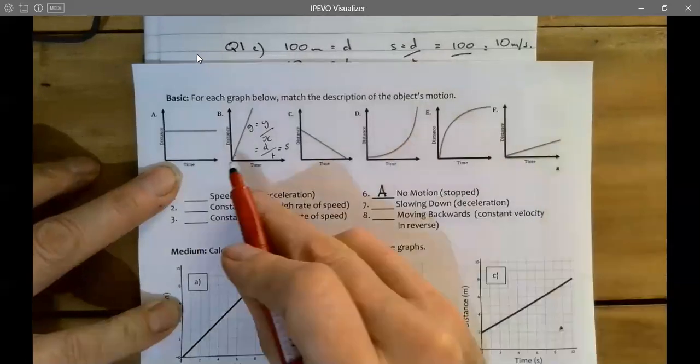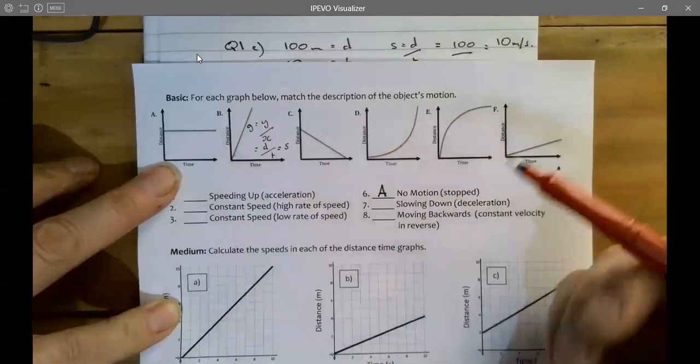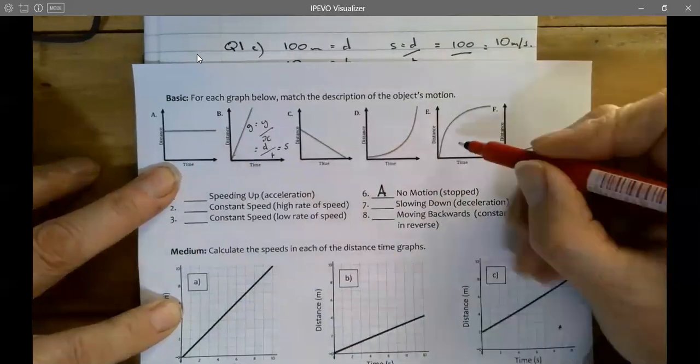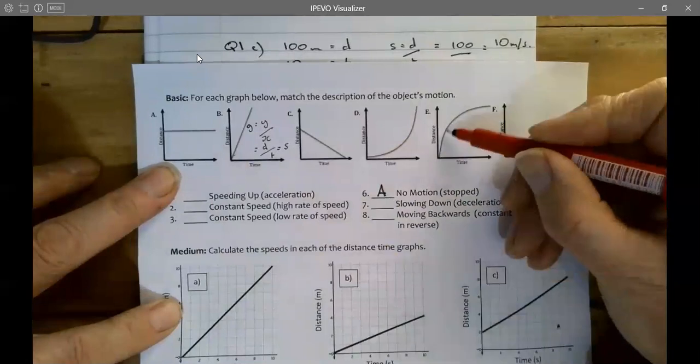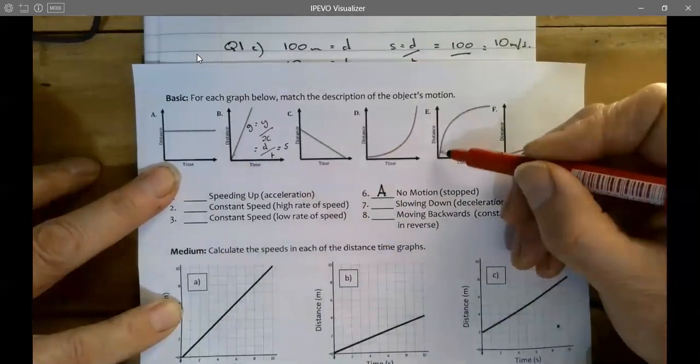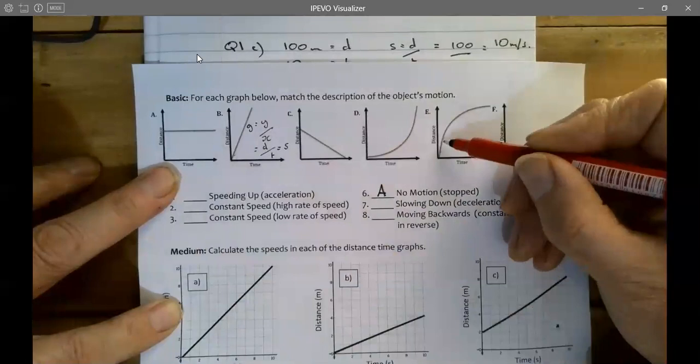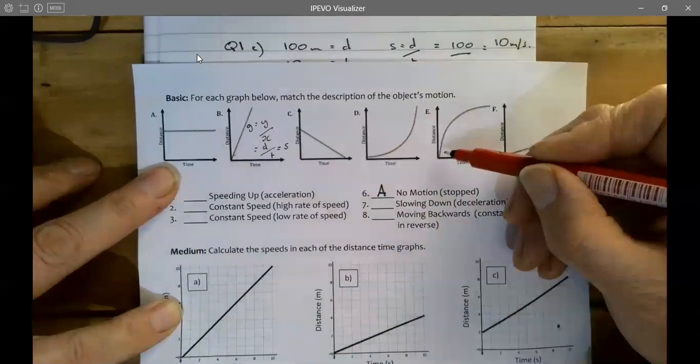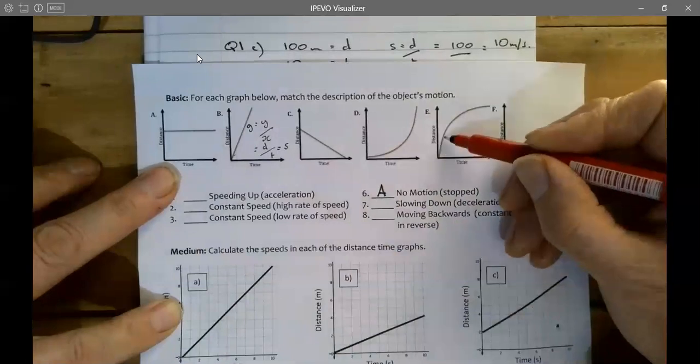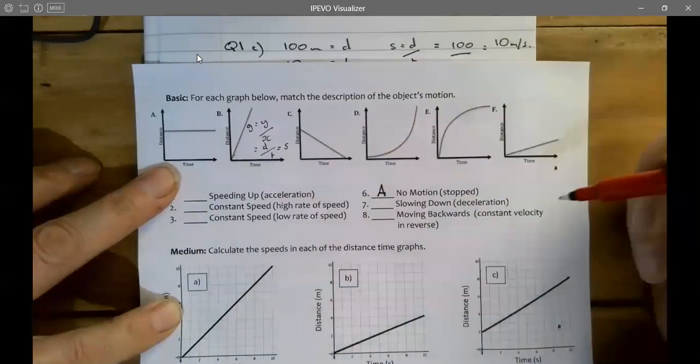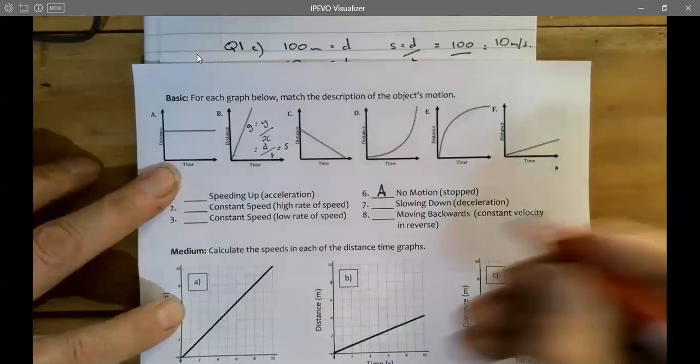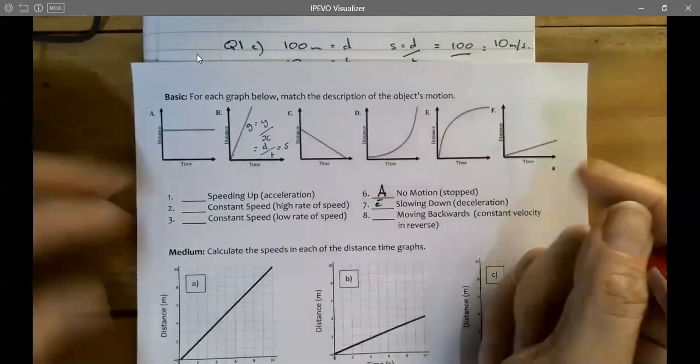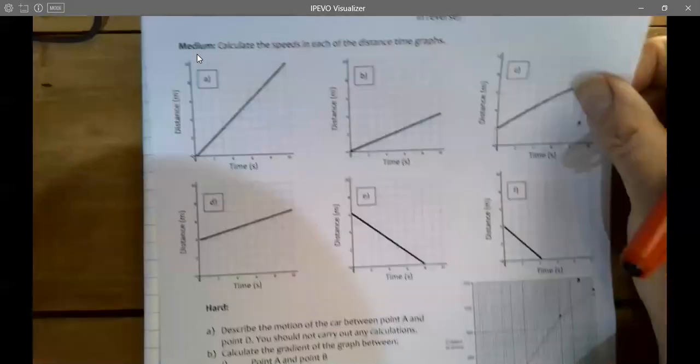Now I'll let you do b, we'll just move on. Let's just do e. This one starts off with a steep line, that must mean the gradient is steep, so that must mean the speed is high, and then it starts to get less. So the speed is high and it starts to get less, so the vehicle is slowing down.